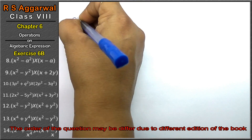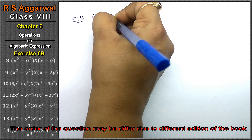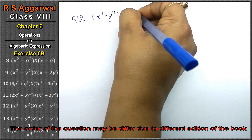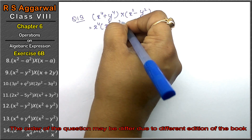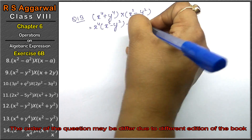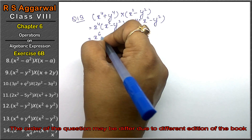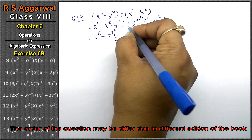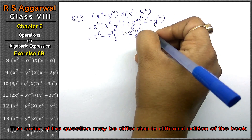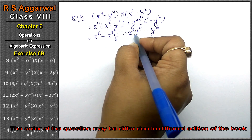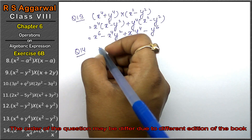Let's do question number thirteen of Exercise 6B, that is algebraic expressions. Question number thirteen is (x to the power 4 + y to the power 4) multiplied by (x squared - y squared). So: x to the power 4 multiplied by (x squared - y squared), plus y to the power 4 multiplied by (x squared - y squared). We get x to the power 6, minus x to the power 4 y squared, plus x squared y to the power 4, minus y to the power 6. All terms are different, so this is the answer.